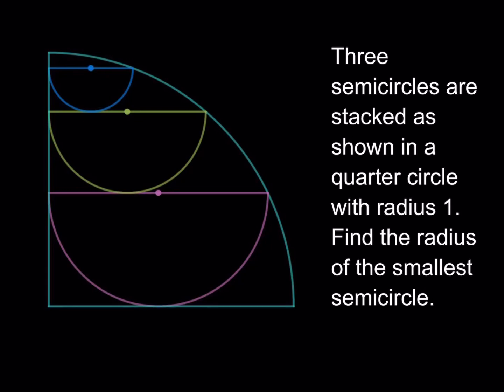Hello everyone! In this video we're going to be solving a geometry puzzle. If you like this video, please comment, subscribe, and hit the bell button for notifications. If you don't like the video, let me know why in the comment section down below. Thank you for watching and let's get started. Three semicircles are stacked as shown in a quarter circle with radius 1. Find the radius of the smallest semicircle, which is the blue one.